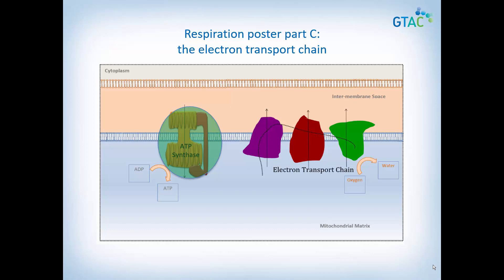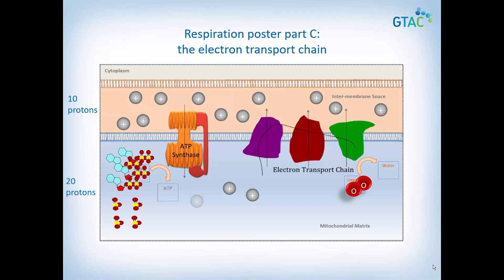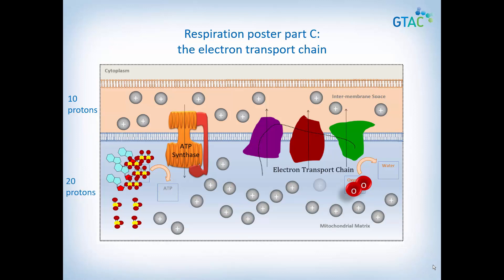Follow the animation to place your model pieces in the correct position on your poster. Place your oxygen molecule in the oxygen box in the matrix. Place your ADP molecules in the ADP box in the matrix and arrange your inorganic phosphate molecules nearby. Put 10 protons in the intermembrane space and 20 protons in the matrix. Finally, place your loaded electron shuttles NADH and FADH2 into the matrix.